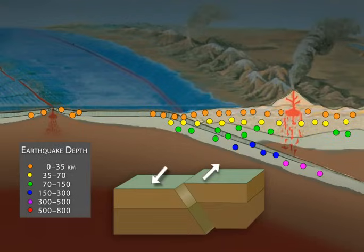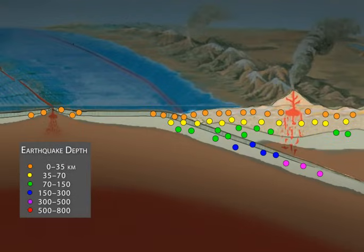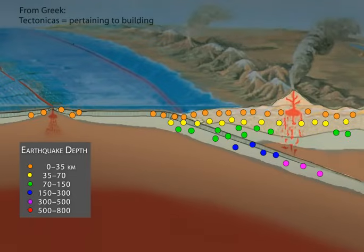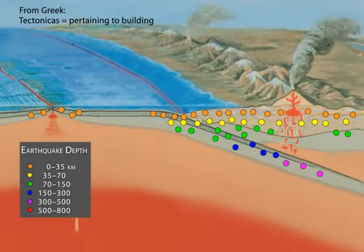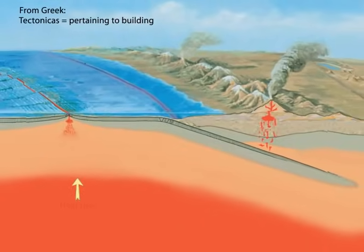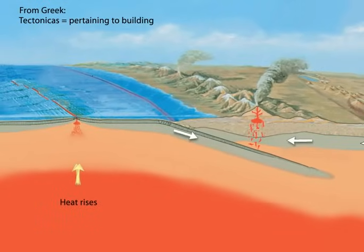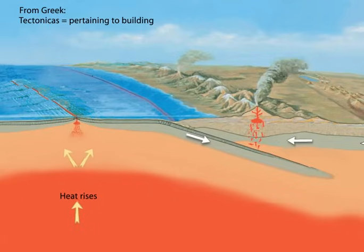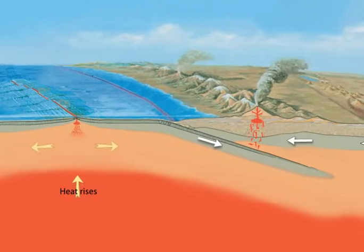Over billions of years, the cooled surface of the Earth has been broken up into the moving plates that are called lithospheric plates, or more commonly, tectonic plates. Because they are mostly more buoyant than the asthenosphere, they float above it. Convection currents, driven by temperature, pressure, and gravity, provide the mechanism for the process we know as plate tectonics.